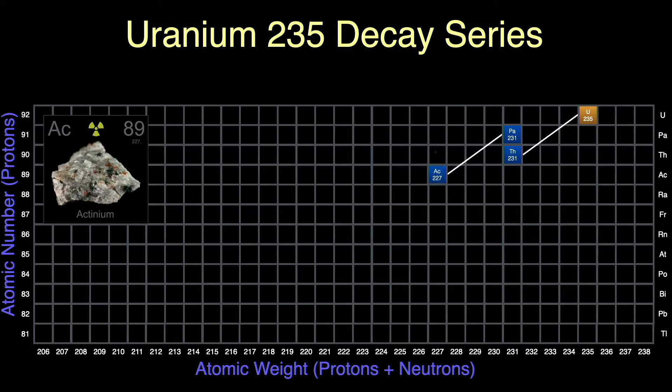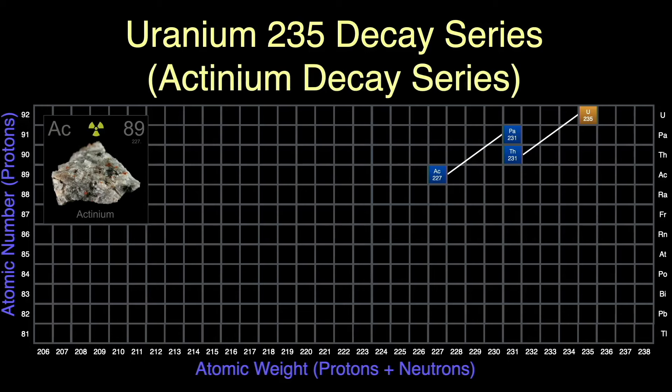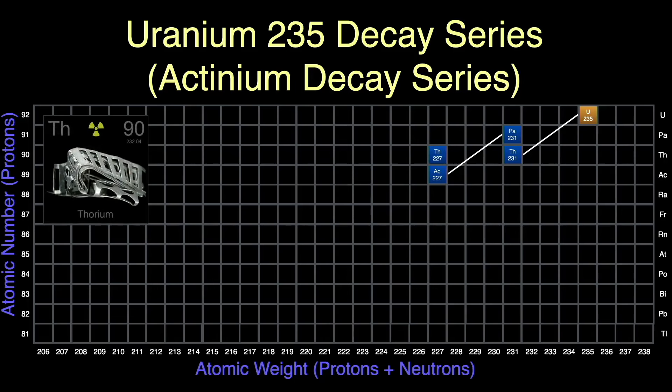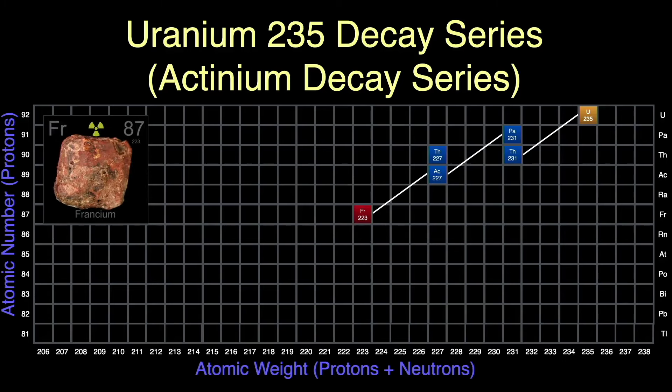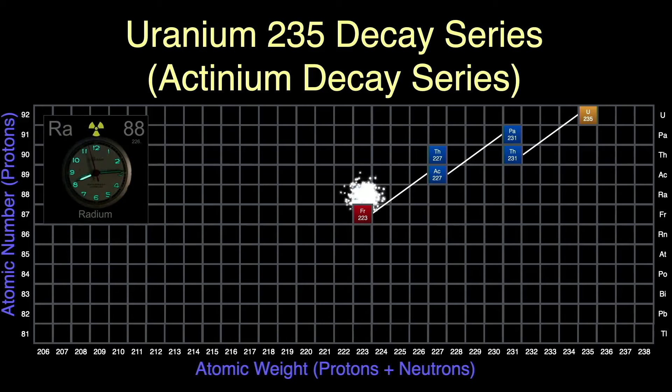That decays by alpha into actinium-227. This is often called the actinium series, so as not to confuse it with the uranium series, which starts with uranium-238. Actinium-227 can decay two ways. 98.62% of the time, it decays by beta into thorium-227, a different isotope of thorium than we saw before, but 1.38% of the time, the actinium decays by alpha into francium-223. The francium decays by beta into radium-223, but our thorium-227 from before decays by alpha to radium-223 as well, giving us two paths to this element. So that's where this isotope of francium comes from.